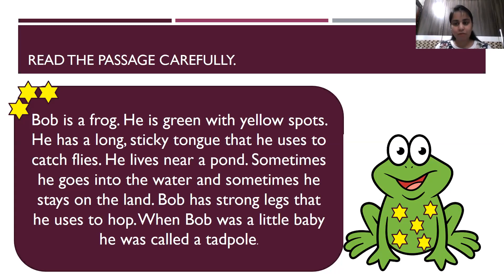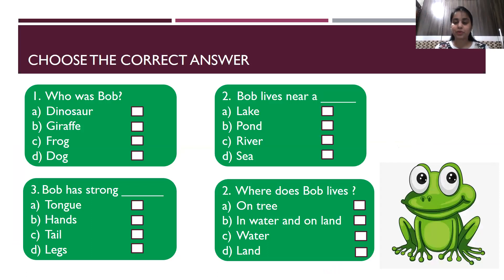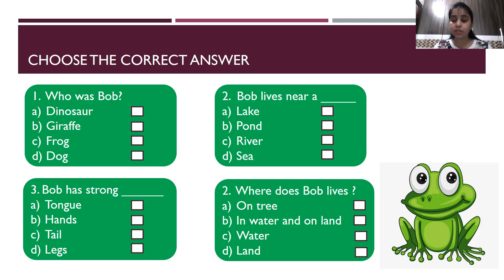So you have all read the passage? Let's move towards the questions. These are multiple choice questions — you have four options for every question and you have to choose the best answer. The first question is: who was Bob? Was he a dinosaur, a giraffe, a frog or a dog? Bob was a frog — so C is the correct answer. The next question: Bob lives near a lake, pond, river or sea? Bob lives near a pond — so B is the correct answer.